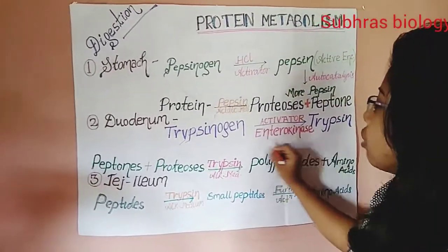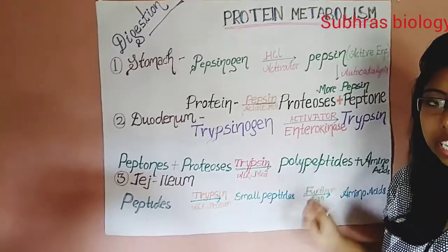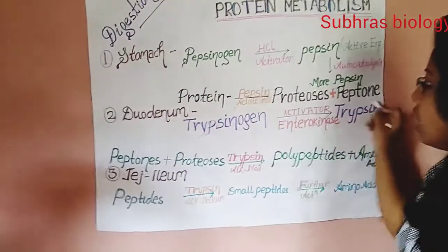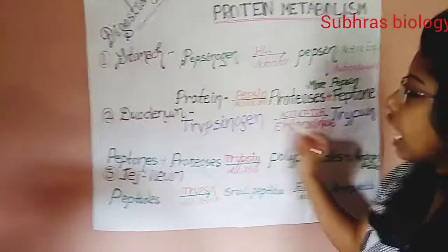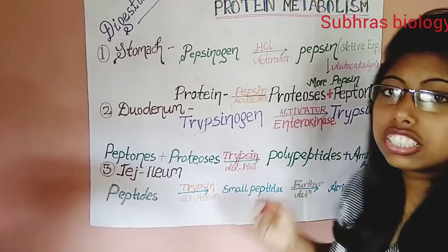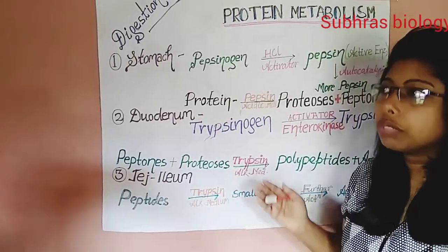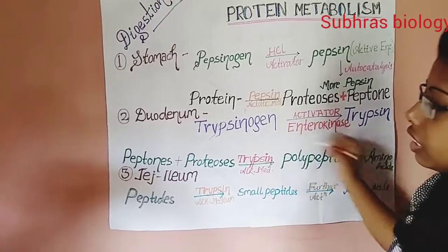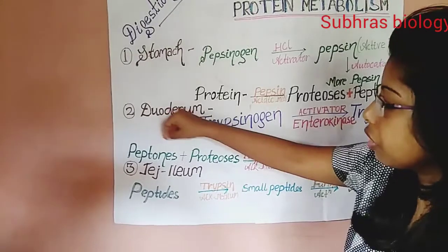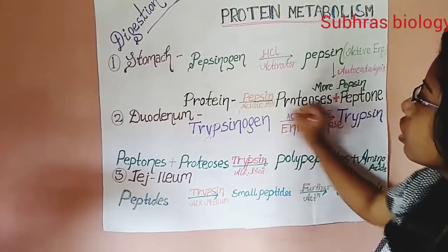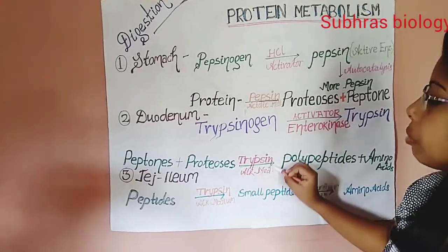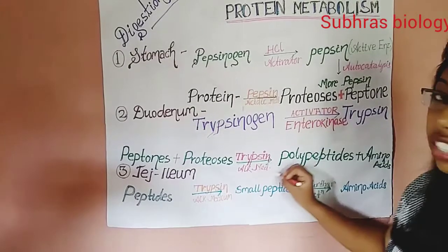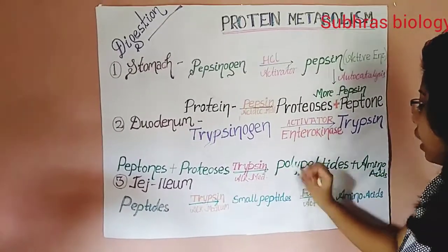Enterokinase is the activator, secreted from the intestinal juice. It acts upon trypsinogen to form trypsin. The other two pro-enzymes — chymotrypsinogen and pro-carboxypeptidase — along with the peptons and proteases formed in the stomach, act upon protein in an alkaline medium via trypsin to form polypeptides and amino acids.